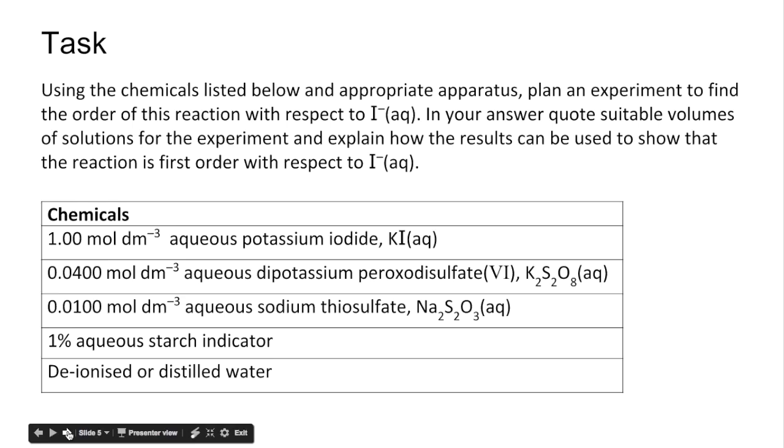Here's the task: using the chemicals listed below and appropriate apparatus, plan an experiment to find the order of this reaction with respect to I⁻. In your answer, quote suitable volumes of solutions for the experiment and explain how these results could be used to show that the reaction is first order with respect to I⁻.